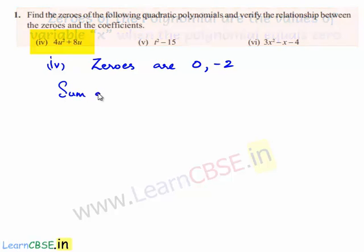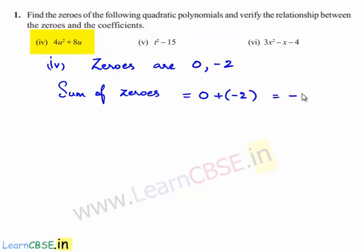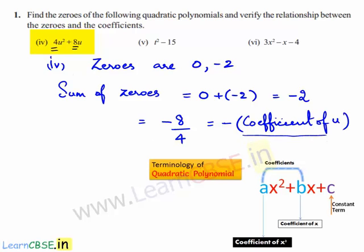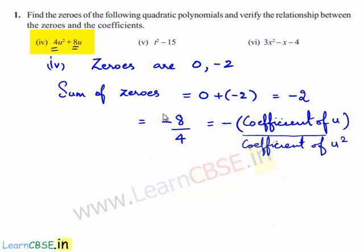The sum of the zeros is equal to 0 plus minus 2, which is minus 2. This is written as minus of 8 divided by 4, where 8 is the coefficient of u and 4 is the coefficient of u squared. So we can conclude that the sum of zeros is equal to minus of coefficient of u divided by coefficient of u squared.